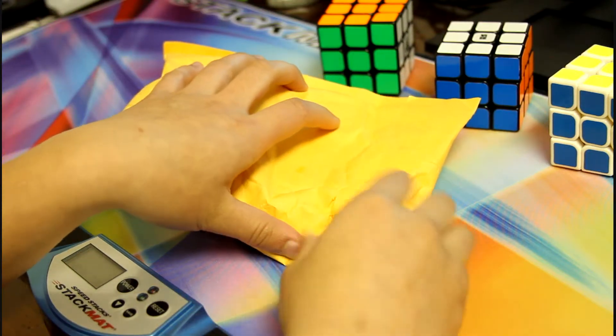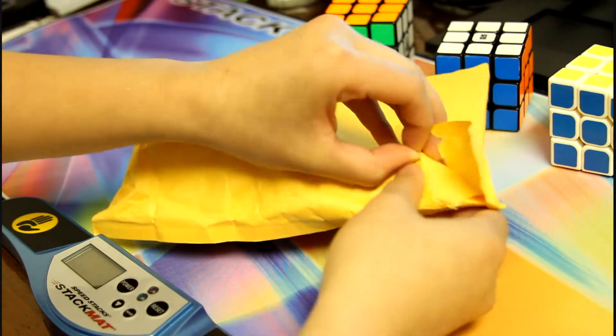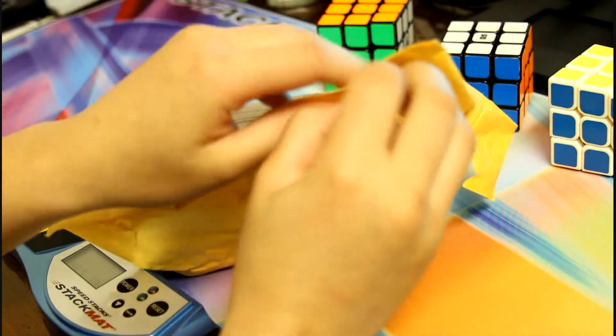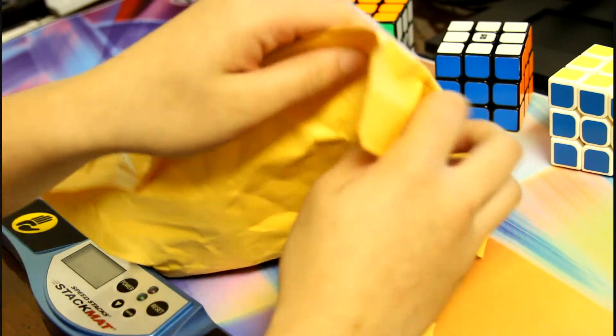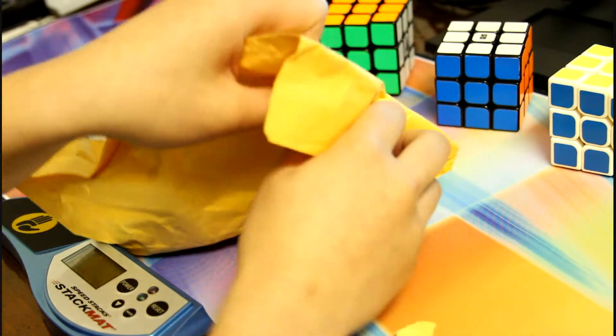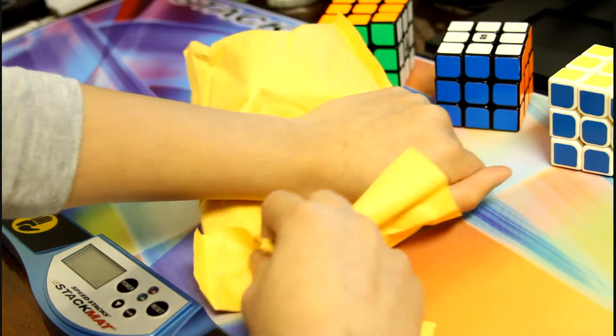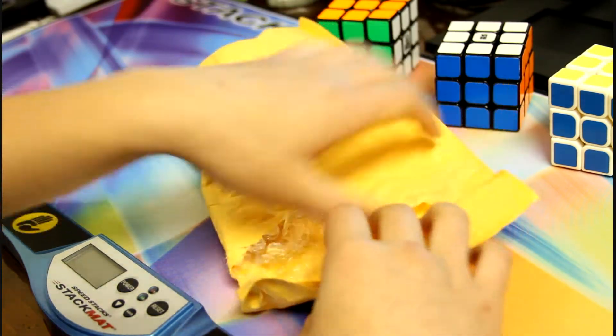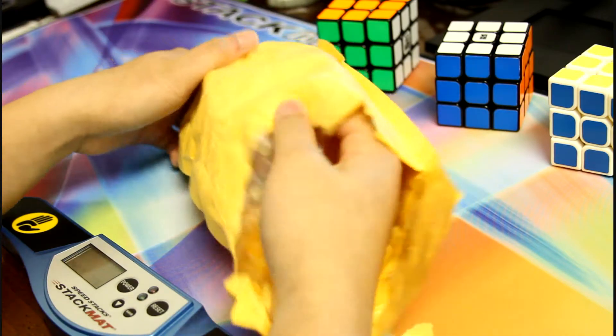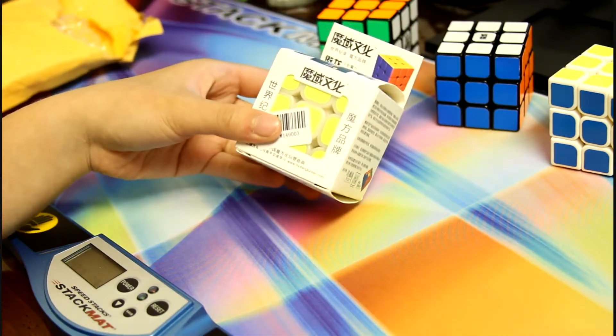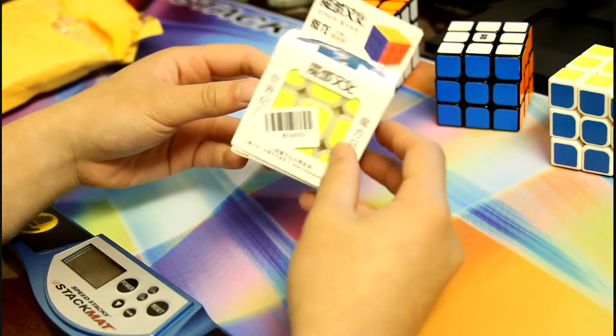So my very first unboxing was also of an Along V2, but that one I guess I over lubed it because it just became really, really slow, and I didn't really like it at all. Even though it was the newer plastic, it just felt really slow to me, but I'm hoping that this primary plastic version is just a little faster.